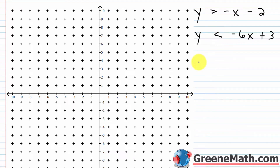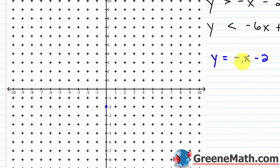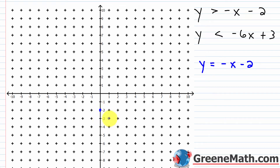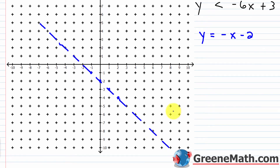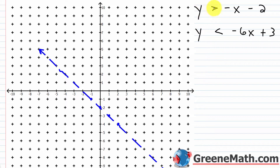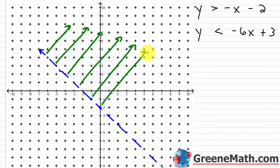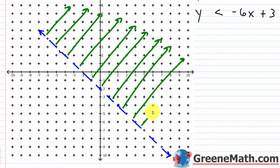I think about y equals negative x minus 2 and graph it with a broken line. The y-intercept occurs at (0, negative 2), and the slope is negative 1 — fall 1, go right 1. I draw the dashed line, then shade above it because y is greater than. Anything above that line works as a solution for the first inequality.